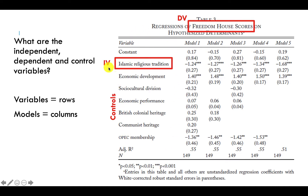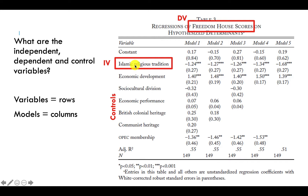The independent variable you're primarily interested in will typically be the first one listed. In general, you can ignore the constant — it does often have a meaning, but it's not something we're interested in here. So looking to the first variable, Islamic religious tradition is the primary independent variable or proposed cause in this study. But you have to take into consideration a bunch of other potential causes of democracy and rule them out if you want to say that Islam is an important factor. These are the control variables and they are listed after your primary variable of interest.